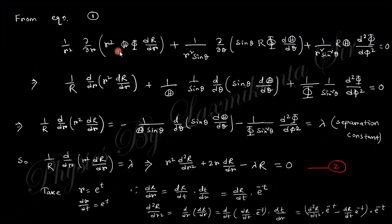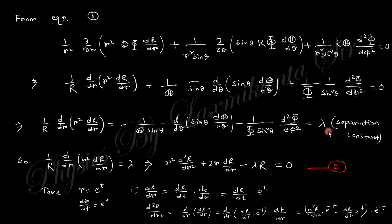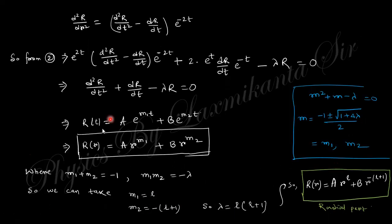After substituting and rearranging, you can see the R part separates out from the theta and phi part. This is a function of R only, so we introduce the separation constant lambda. Setting the R-dependent part equal to lambda and rearranging, with the substitution R equals e to the power t, you obtain an expression that gives you a second-order differential equation.